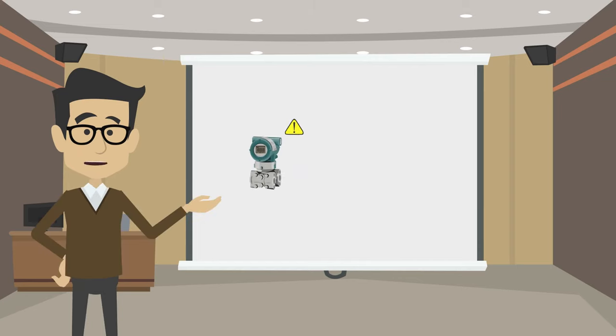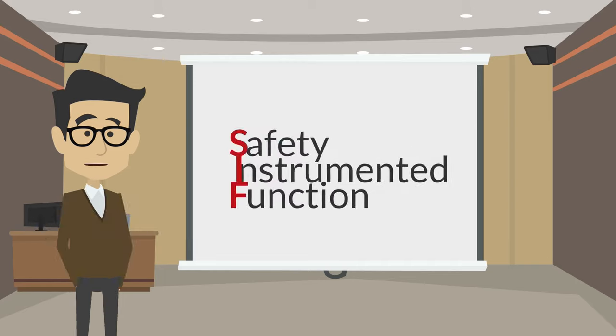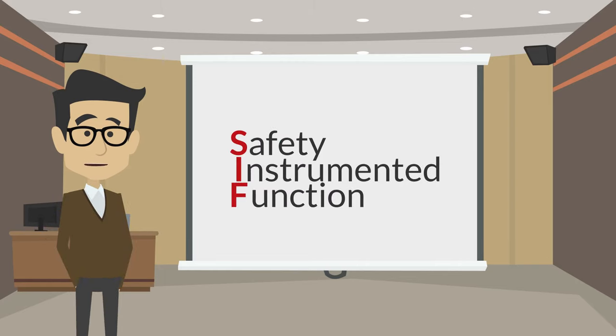If the SIS senses a hazardous condition, it will send a signal to a final element, typically an actuated emergency shutdown valve, or ESDV, to isolate or shut down the system. This action is called a safety instrumented function, or SIF,